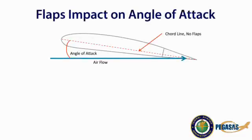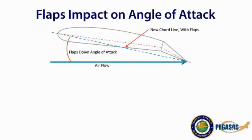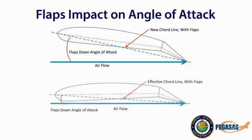This is a wing with the flaps in the retracted position. When the flaps are extended, it changes the effective cord of the wing, which increases the angle of attack and results in a momentary increase in lift. To compensate for this new cord line, the pilot will normally adjust the elevator pressure to dissipate this momentary increase in lift to maintain altitude. The result is that an aircraft that has deployed flaps can produce the same lift at a lower angle of attack until the descent profile is initiated.